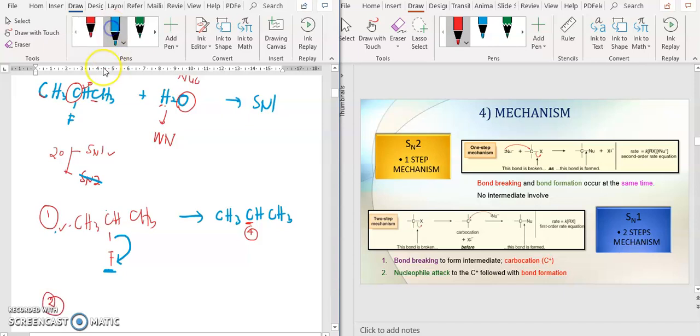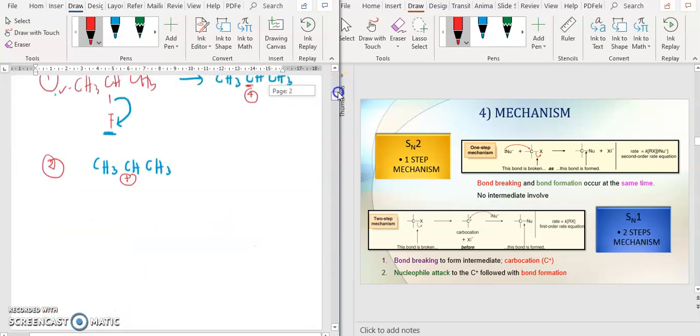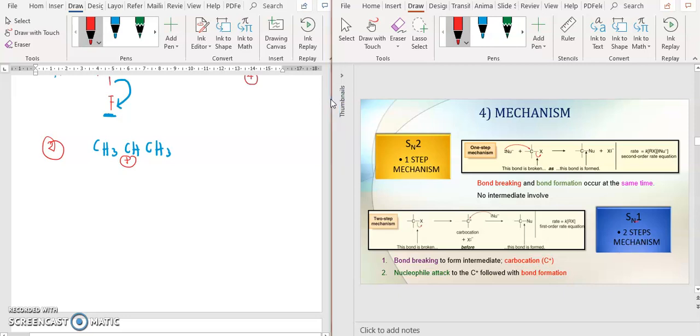This is your carbocation with positively charged. For here there are two types of products that can be formed for SN1 mechanism. The first one product is in the form of retention, the second one is in the form of inversion. You will get two products. What is retention and inversion? Retention means formation of product at the same location. Inversion means different location. Same location is the same location as your X group.